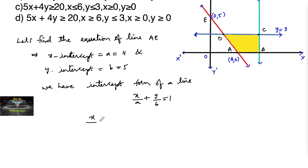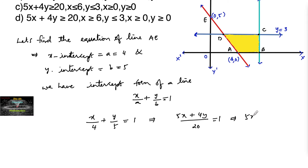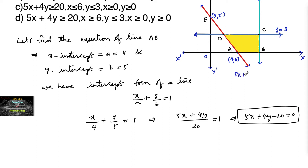Here we can write the line equation as x/4 + y/5 = 1. On simplifying: 5x + 4y divided by 20 equals 1, or equivalently 5x + 4y - 20 = 0. This is the equation of line AE. Now to check the inequality and determine which half-plane the shaded region is in.